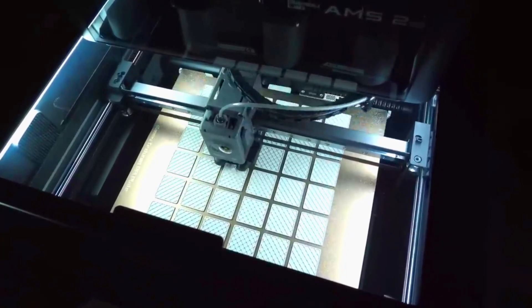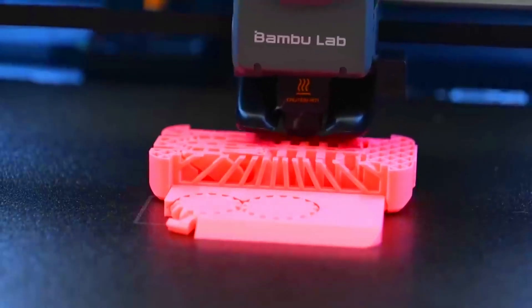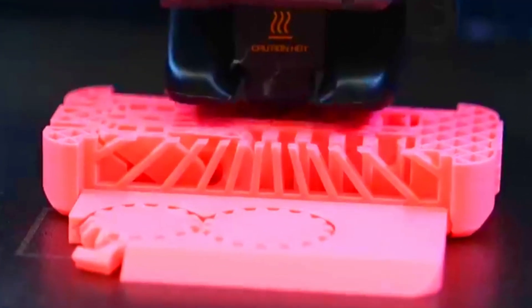Talk is cheap, so let's look at the prints and the data. The torture toaster shows excellent dimensional accuracy. All clearances down to 0.2mm move freely.